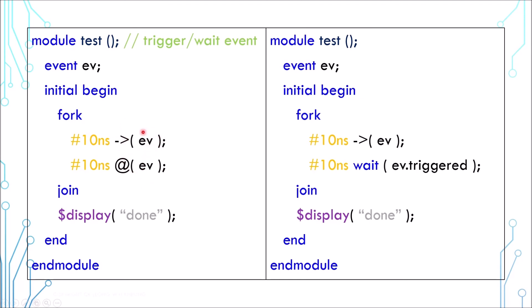If blocking happens first and trigger happens later, the blocking will see the trigger and the thread will complete. But if trigger happens first and blocking happens later, the blocking will not see the trigger and the simulation will hang. This random behavior is quite undesirable in the simulation. However, the wait statement provides a different resolution.